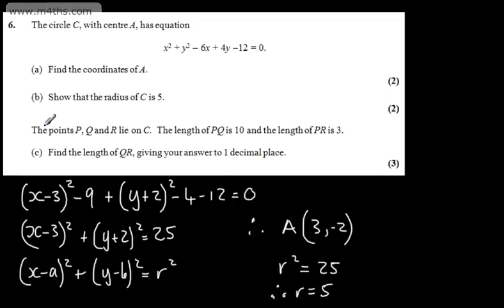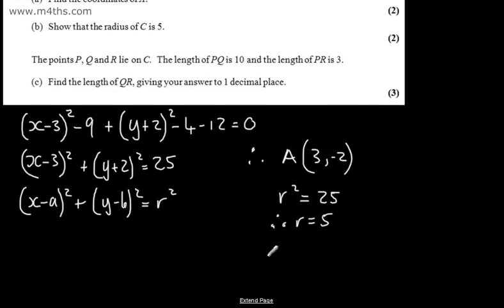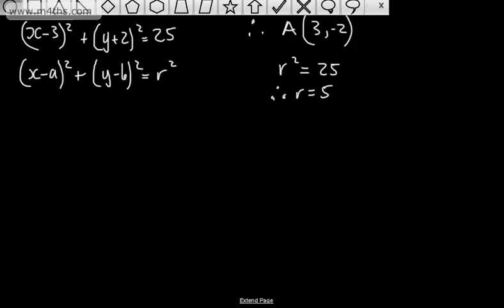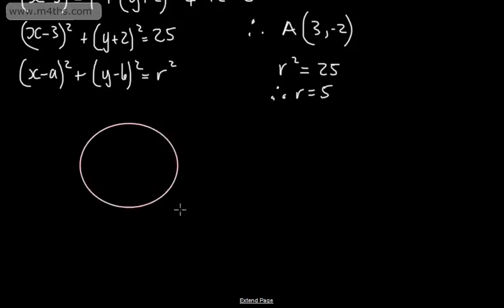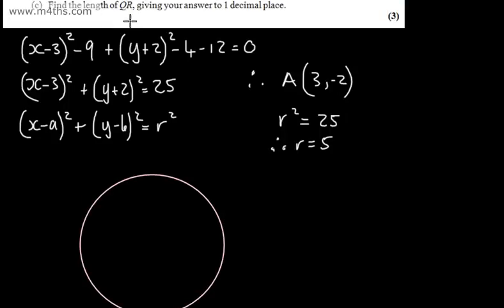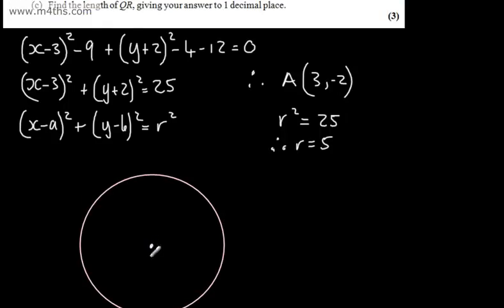We're told the points P, Q and R lie on C. The length of PQ is 10 and the length of PR is 3. In part C, for 3 marks, we need to find the length of QR, giving our answer to one decimal place. Let's draw a quick sketch. We have the circle, and the centre is going to be (3, -2).